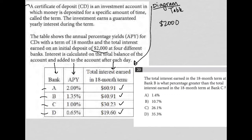Interest is calculated on the total balance of the account and added to the account after each day. To me, that's important, so I'm going to write that down: interest paid daily — it goes into your account every day.